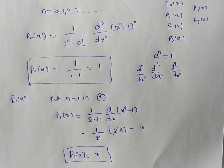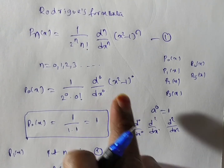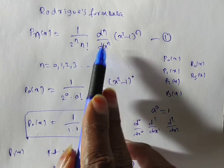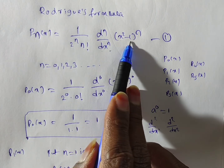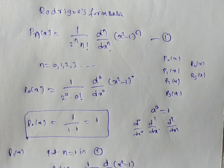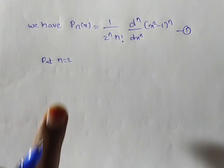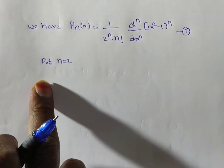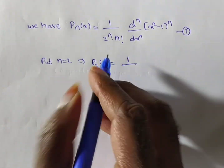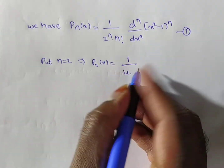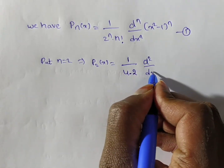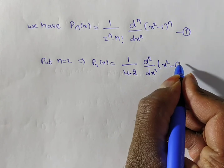Now for P2(x), substitute n equal to 2 in the Rodrigues' formula. Then P2(x) equals 1 by 2 squared, into 2 factorial, into d squared by dx squared, times of (x squared minus 1) whole squared. Here 2 squared is 4 and 2 factorial is 2, so the denominator is 8. Next we expand (x squared minus 1) squared using the a minus b whole square formula, giving x to the power 4 minus 2x squared plus 1.